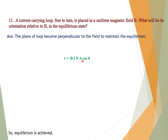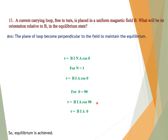The torque is given by τ = BINA cosθ. For N = 1, τ = BIA cosθ. For equilibrium, the plane and magnetic field are perpendicular (θ = 90°). Putting θ = 90°: τ = BIA cos90° = BIA × 0 = 0. Zero torque means equilibrium is achieved when the plane of the loop is perpendicular to the magnetic field.